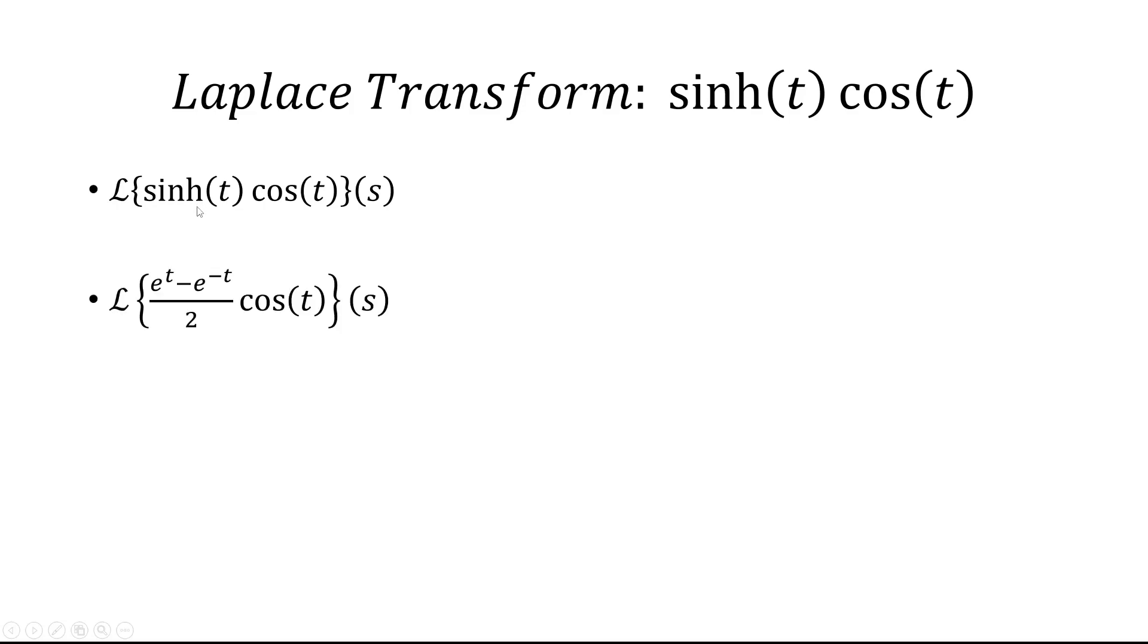So we're writing sinh(t), that's just e^t minus e^(-t) over 2, and we're going to multiply that by cosine of t.